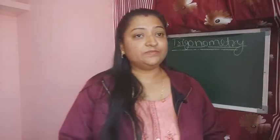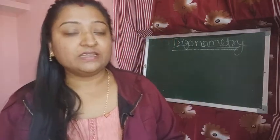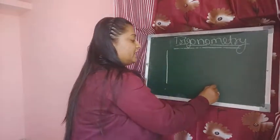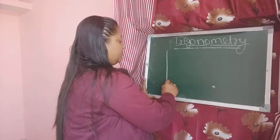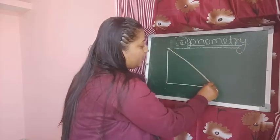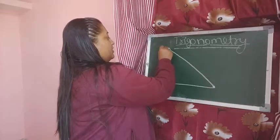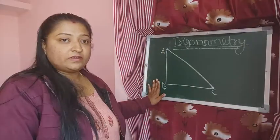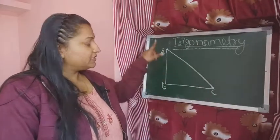I will give you an example where a right angle triangle can be imagined and found. Suppose we take an example of visiting the Eiffel Tower. You are standing at some distance from it and looking at the top of the tower from your place. Does it look like a triangle? Can you find the height of the Eiffel Tower from where you are standing without measuring it in the actual manner?